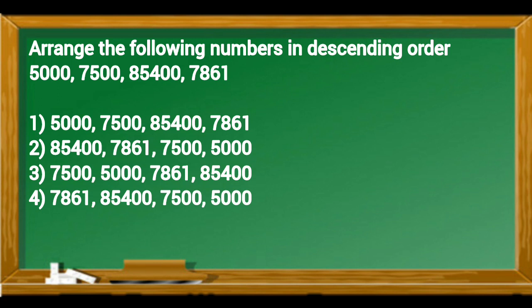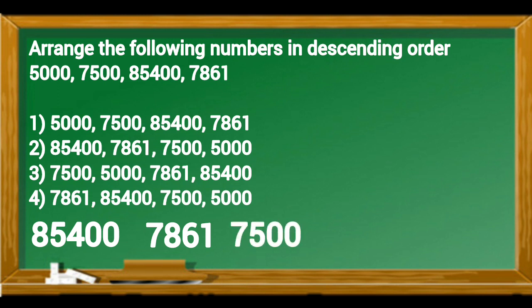In these numbers greatest number is 85,400. Then the smaller number is 7,861. Next smaller number is 7,500. And the smallest number is 5,000. So the descending of these numbers is 85,400, 7,861, 7,500, 5,000. And according to this, the second option is correct answer.